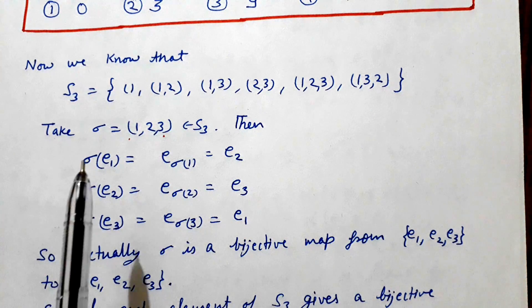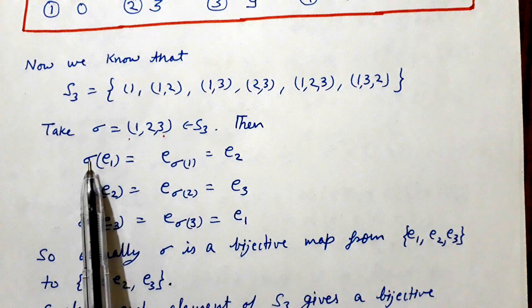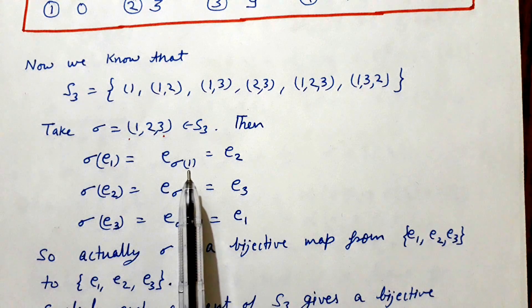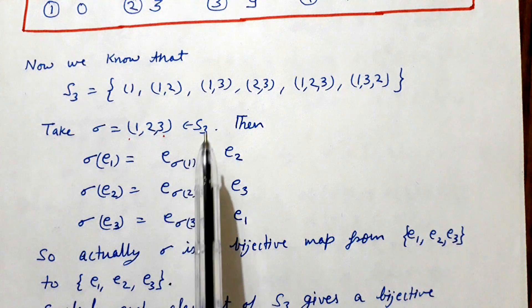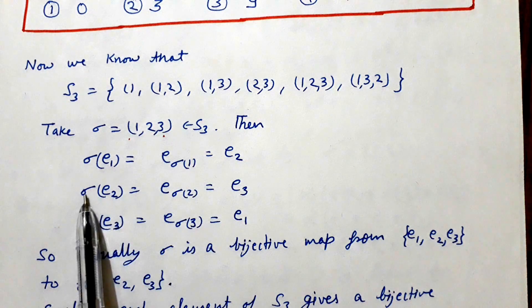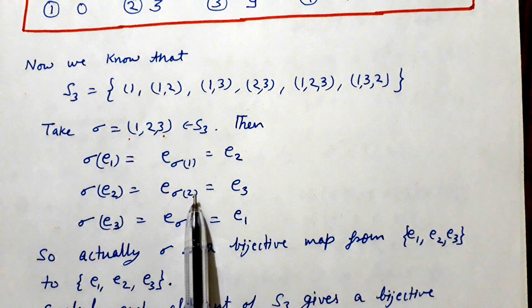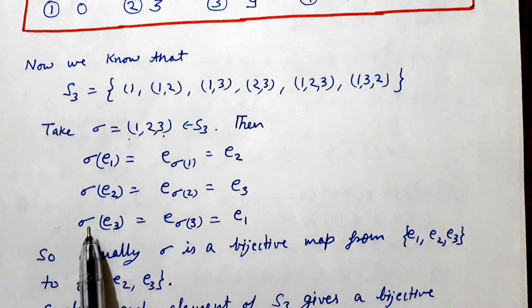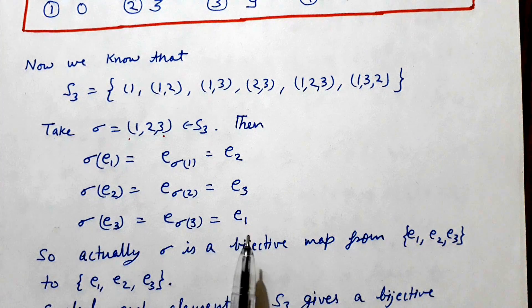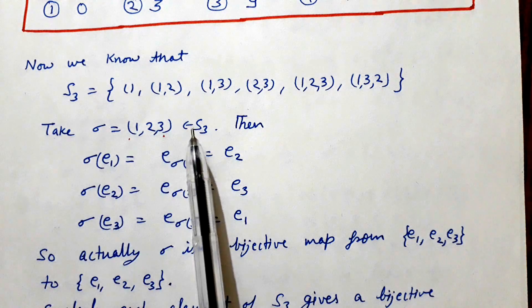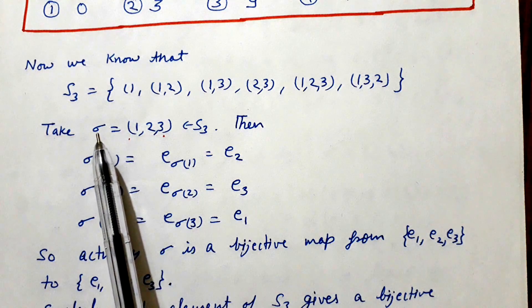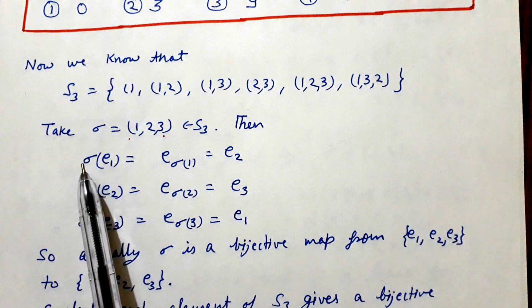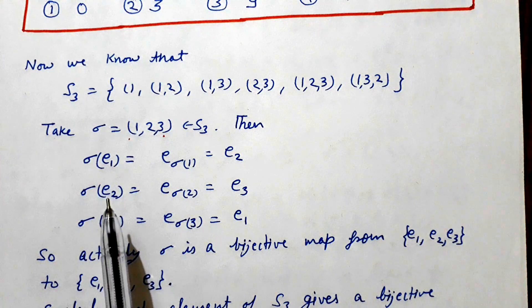Suppose I take sigma = (1 2 3) in S3. Then by definition, sigma(E1) = E_{sigma(1)}. The image of 1 under sigma is 2, so this is E2. Similarly, sigma(E2) = E_{sigma(2)} and the image of 2 under sigma is 3, so this is E3. And sigma(E3) = E_{sigma(3)} = E1, because sigma(3) = 1.